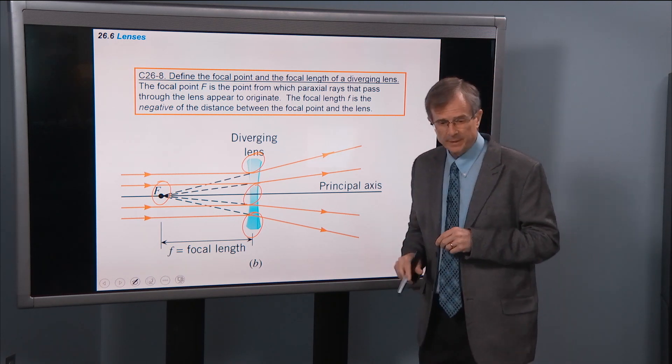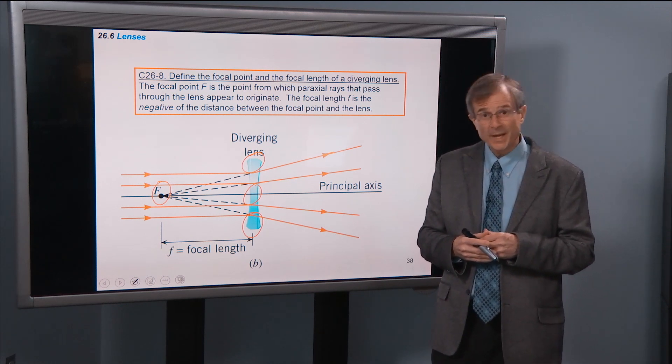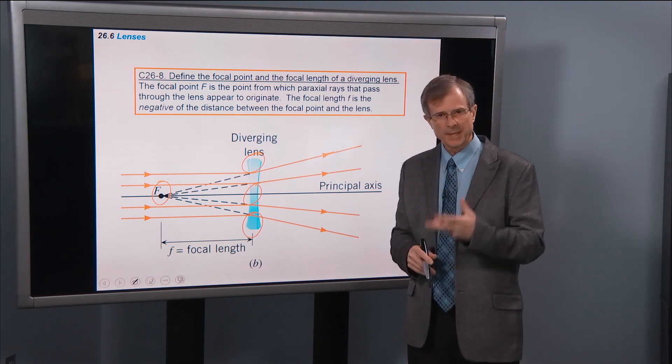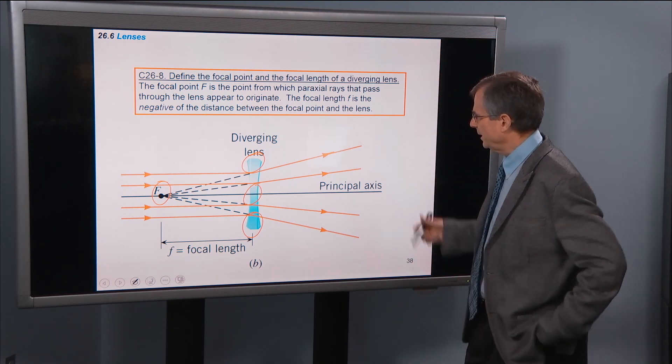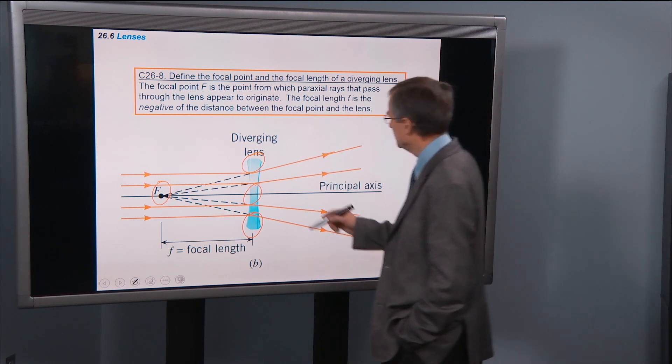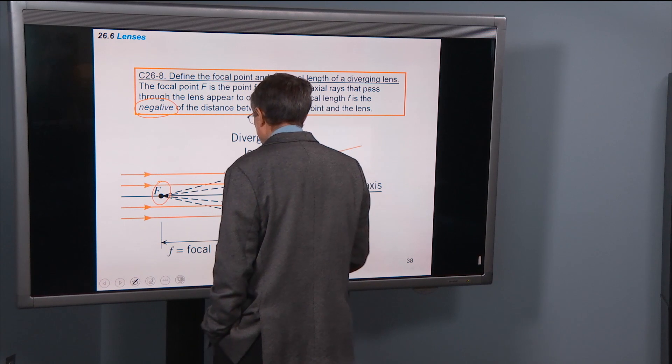So this is a lot like the convex lens. We had to define the focal length as a negative number, and here we do the same thing. The focal length is the negative of the distance between the focal point and the lens. So it's always going to be a negative number.